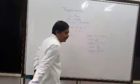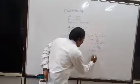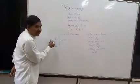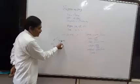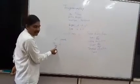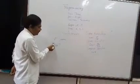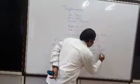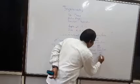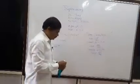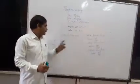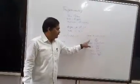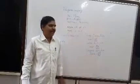The third function is the tangent function, simply written as tan theta. Tan theta is defined as opposite side divided by adjacent side. So tan θ = opposite / adjacent.